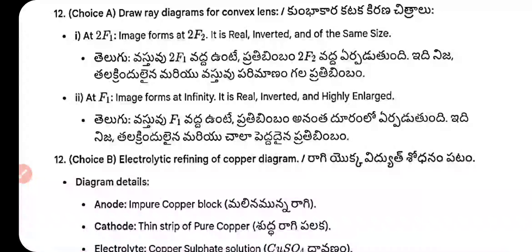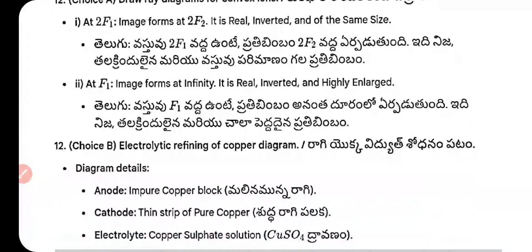Question 12 — Ray diagram for convex lens: at 2F₁, image forms at 2F₂, real, inverted, and of the same size. At F₁, image forms at infinity, real, inverted, and highly enlarged.